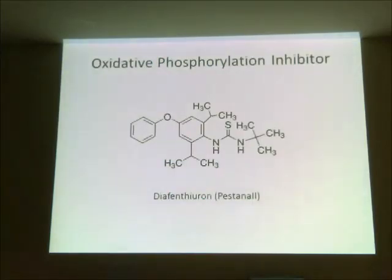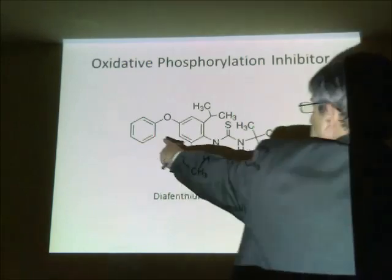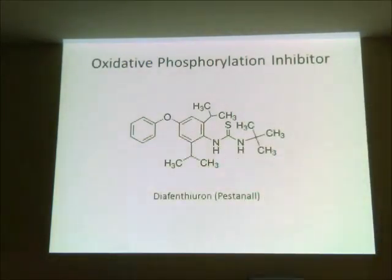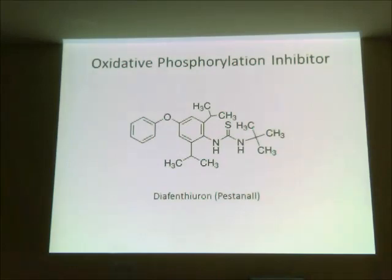This compound is called diafenthiuron — a diphenyl ether, and we've seen similar compound types in the herbicide arena. This one is an oxidative phosphorylation inhibitor, meaning it acts as a mitochondrial poison. It will inhibit oxidative phosphorylation — namely, the production of ATP. Insects will not be able to biosynthesize ATP, and therefore won't have the high-energy molecules necessary to carry out life processes, which ultimately kills them.